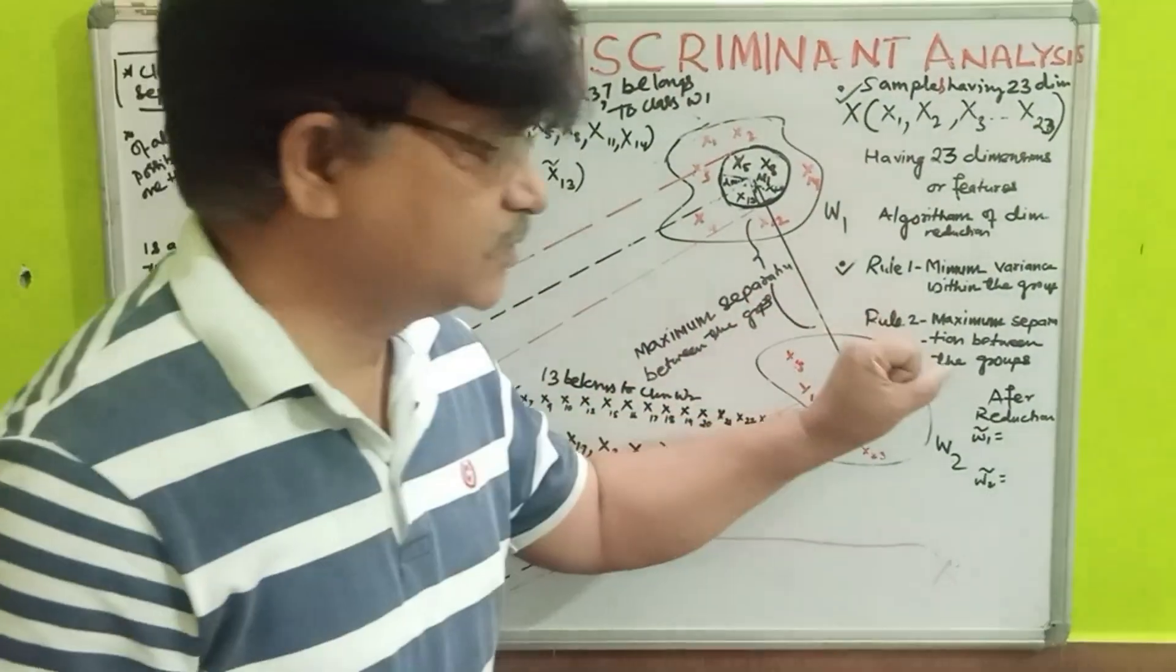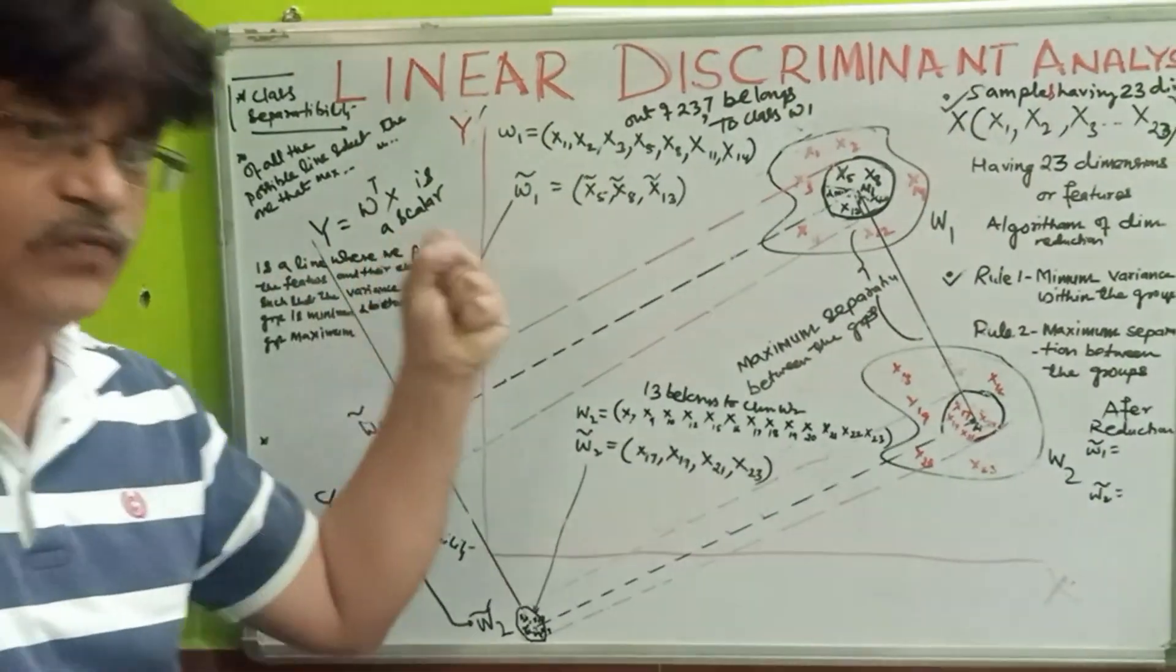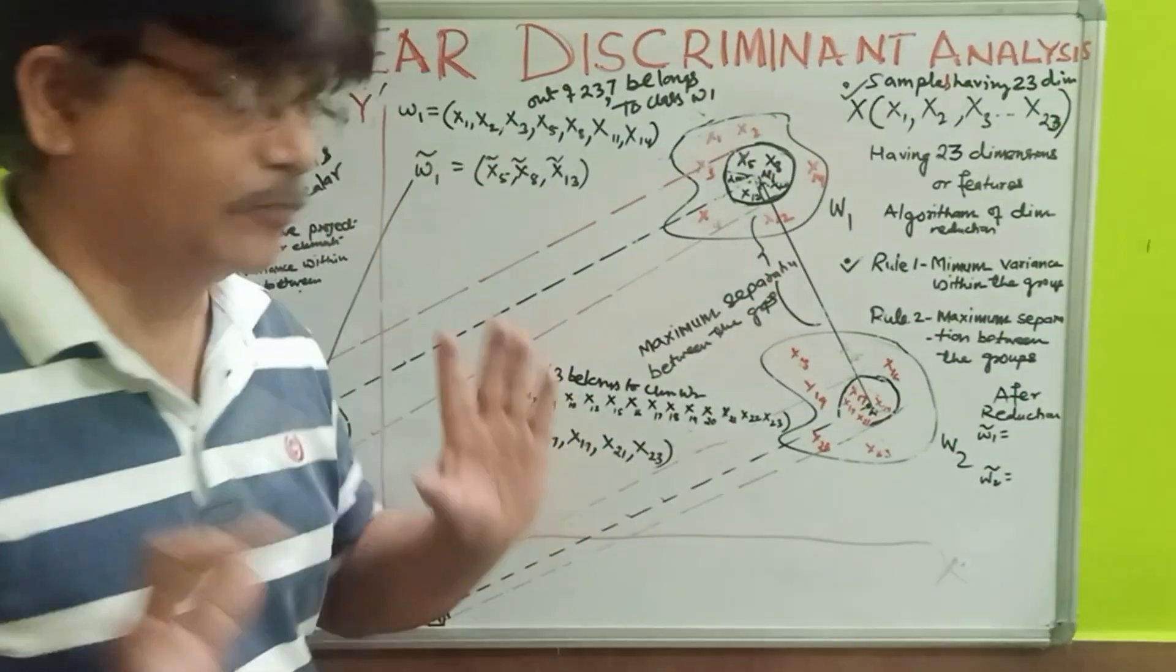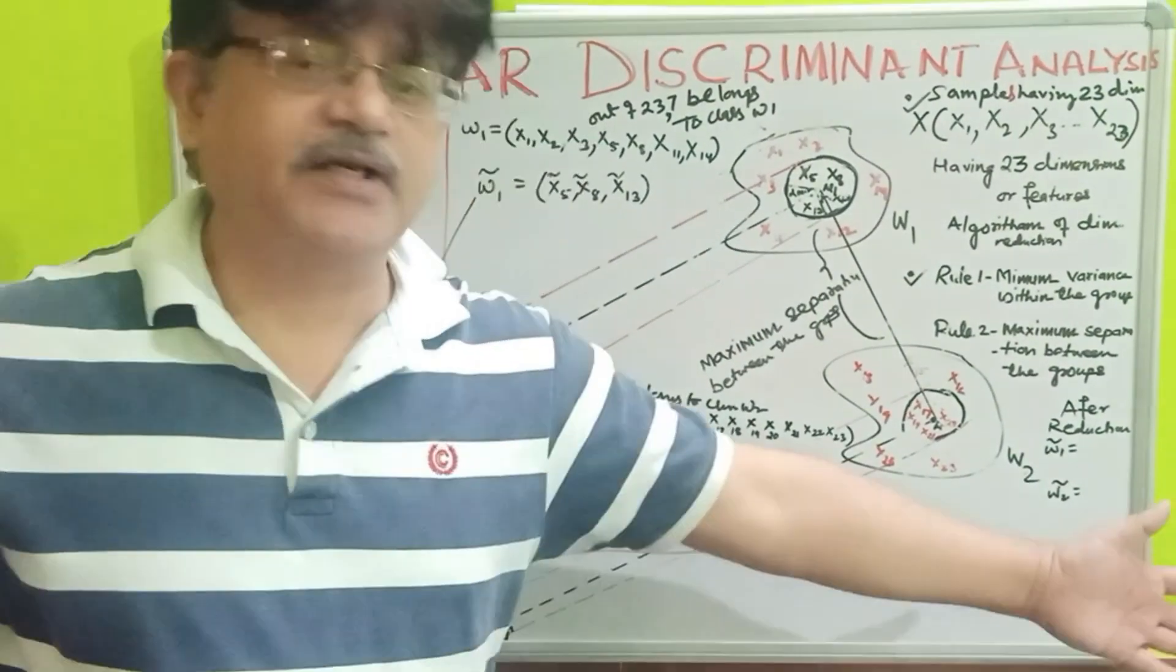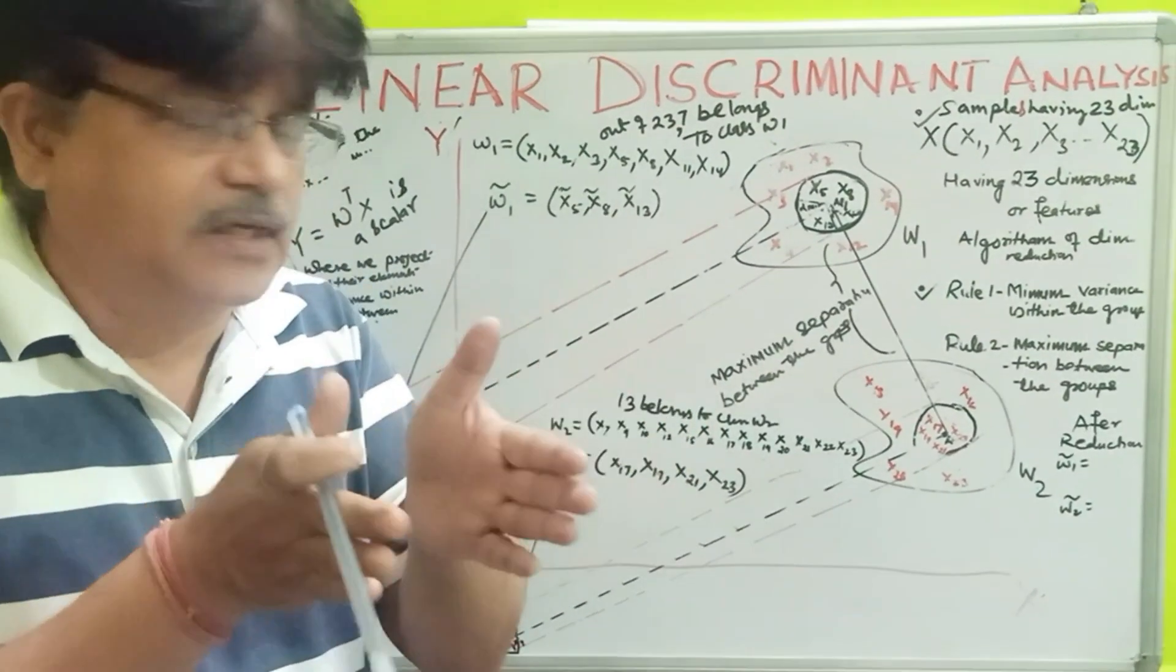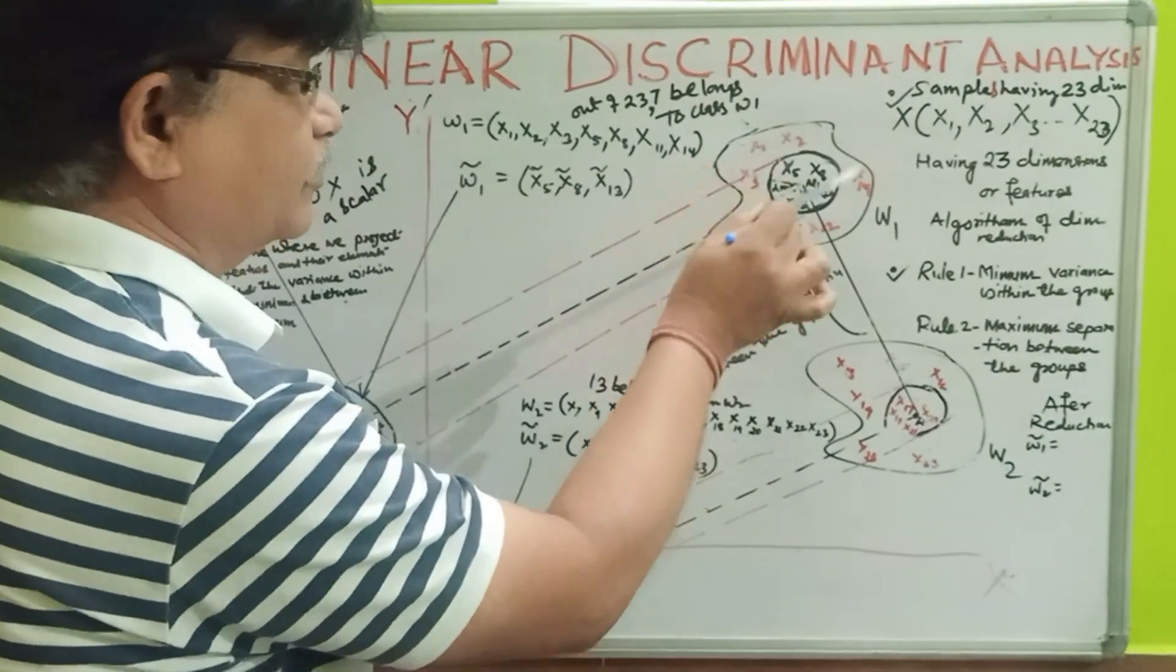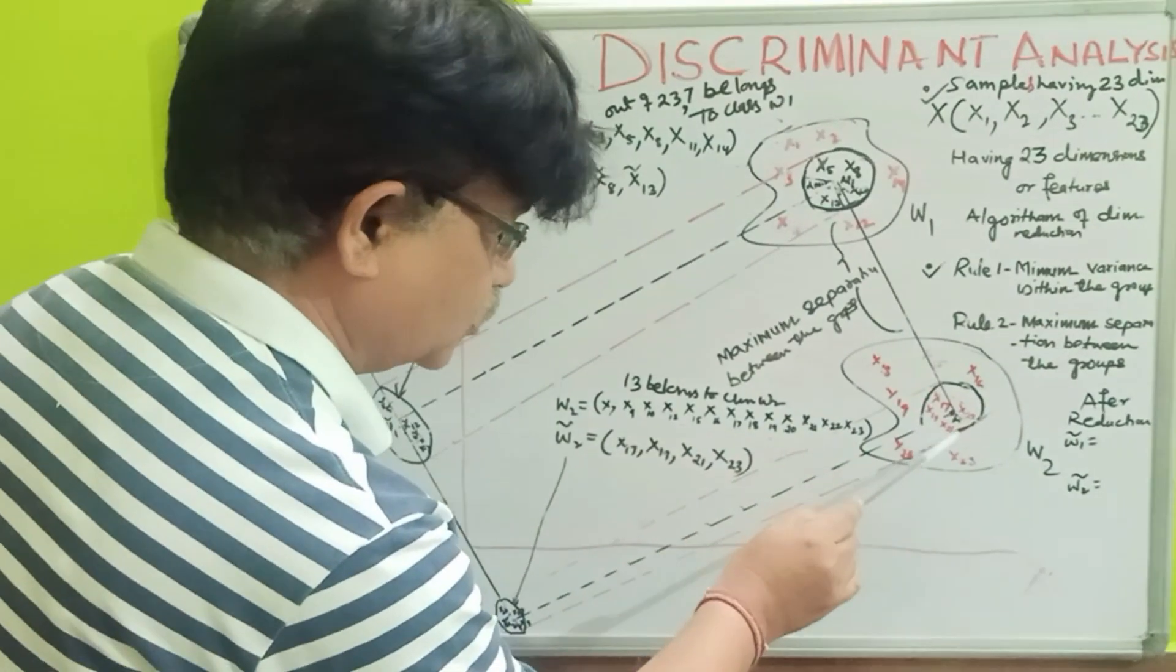So, my rule is this, the algorithm which I am going to create to create a subspace which has all the information. So, what is that? The rule is this, minimum variance within the groups. Variance, you know well. That is called scattering. So, scattering within the group should be smaller. Minimize the scattering. So, I have applied a formula. What I did, I have taken the mean of this group W1. And that comes out to be Mu1. And the mean of this group comes out to be Mu2.